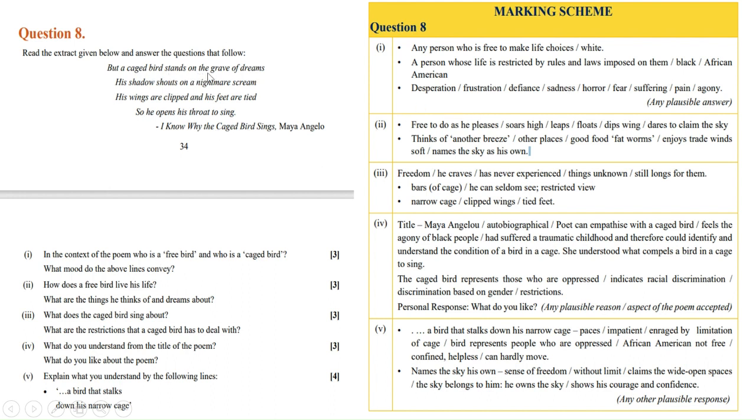What mood do these lines convey? The lines 'but a caged bird stands on grave of dreams, his shadow shouts on nightmare scream, his wings are clipped and his feet are tied' convey oppression, desperation, frustration, sadness, horror, fear, suffering, pain, agony, defiance. Any of these words describe the mood of these lines.